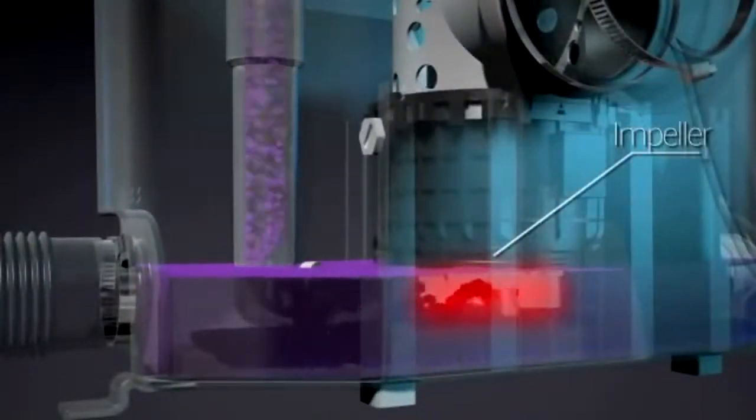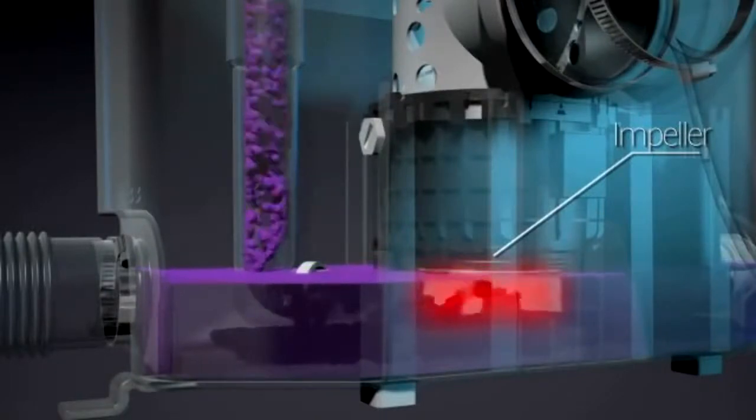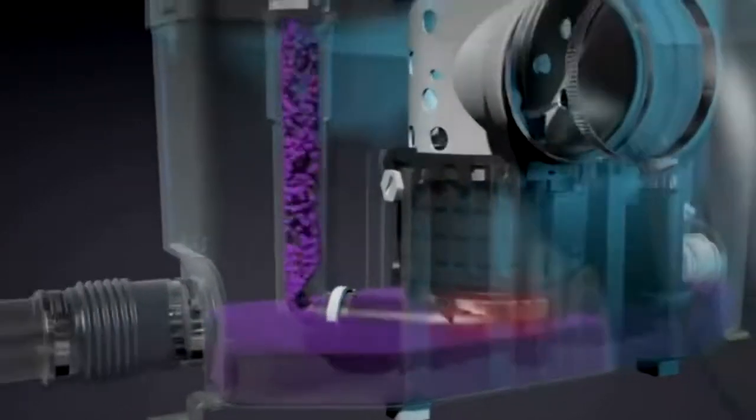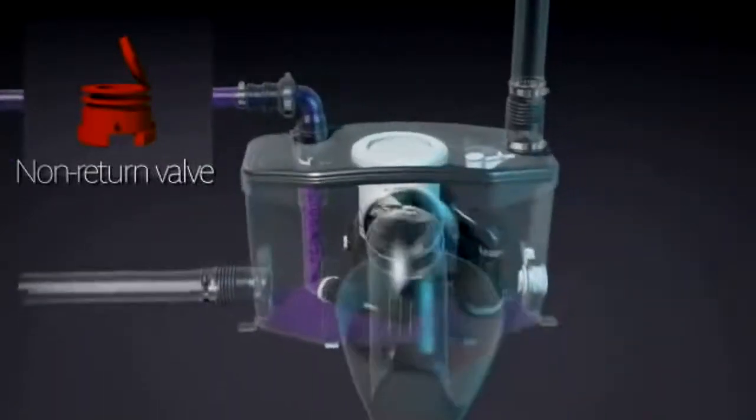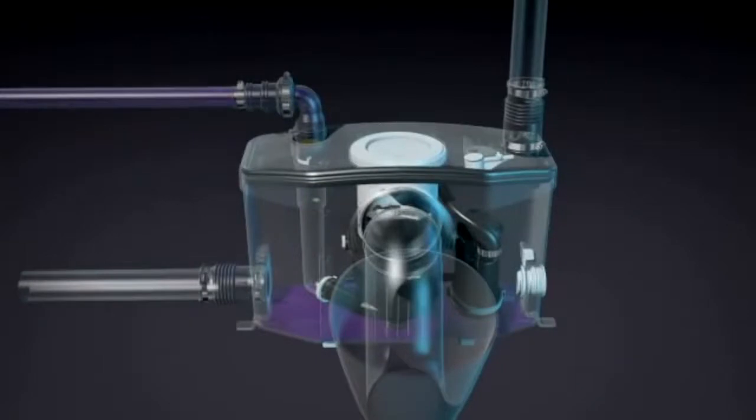Once it exits the pump, the waste goes through a discharge elbow which connects to the 3-quarter inch pipe. A built-in non-return valve prevents the waste water from traveling back into the pump once the system turns off.